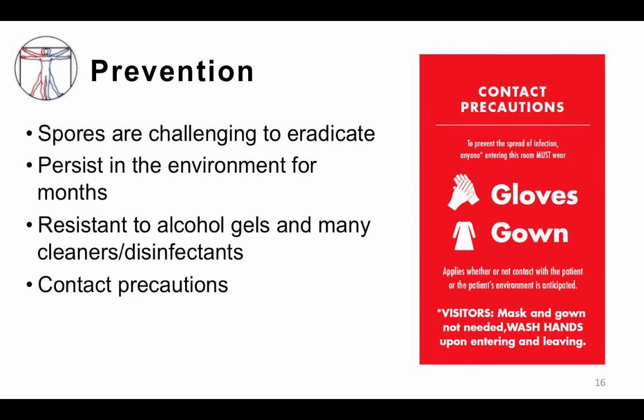Prevention of C. diff is a huge issue in healthcare facilities. Contact or enteric precautions means gown, glove, and disposable medical equipment when possible, since any article of clothing or equipment — including your own white coat, your tie, your stethoscope — can serve as a vector for C. diff spores. This is one case in which hand hygiene must be done with soap and water. Unfortunately, alcohol-based hand rubs and gels do not get rid of spores. In addition to antibiotic stewardship, we must also try to limit gastric acid suppression when possible. Just as a reminder, wash your hands with soap and water when you see a patient with C. diff.